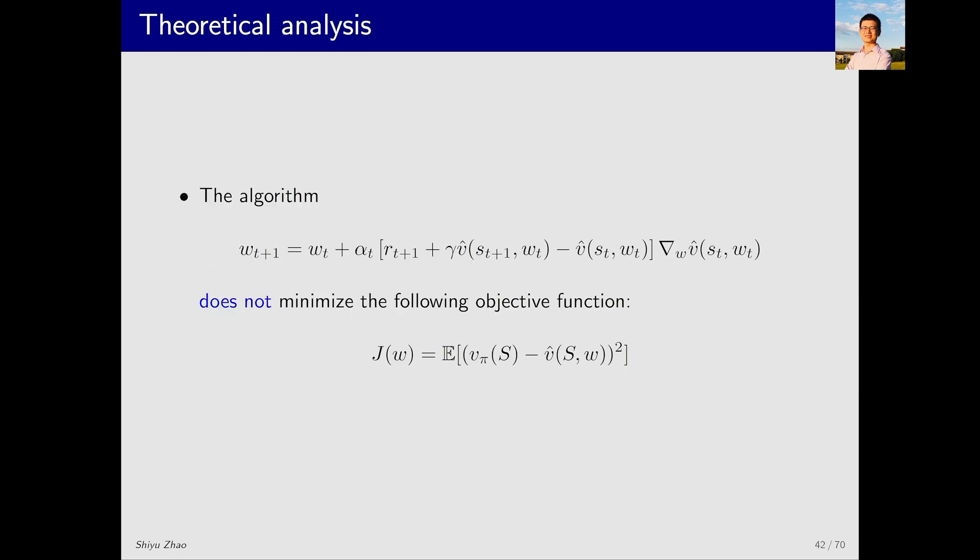Next, let me quickly go through the storyline that is more rigorous with just a few slides. The basic conclusion is that the algorithm we just presented doesn't actually minimize the objective function we mentioned earlier. So, what does it minimize?